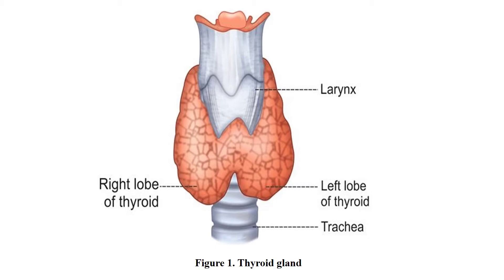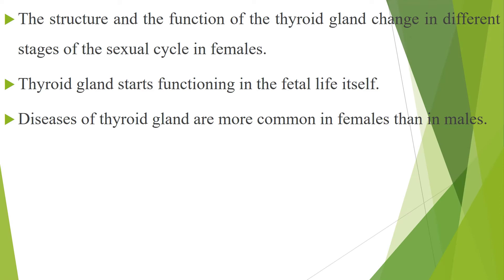Thyroid is larger in females than in males. The structure and the function of the thyroid gland change in different stages of the sexual cycle in females. Its function increases slightly during pregnancy and lactation, and decreases during menopause. Thyroid gland starts functioning in the fetal life itself; however, the maximum activity of the gland is achieved only after puberty. Diseases of thyroid gland are more common in females than in males.